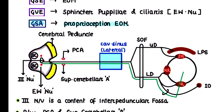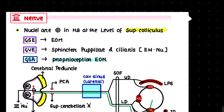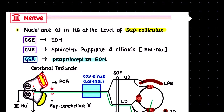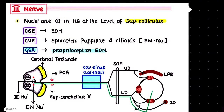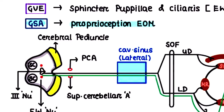Now let's talk about the course. This is a section of our midbrain. The dorsal aspect contains the superior colliculus, and the ventral part has the cerebral peduncles. Between the cerebral peduncles there is the interpeduncular space. The third cranial nerve nuclei are present in two columns, joined together, with the Edinger-Westphal nuclei beside them.